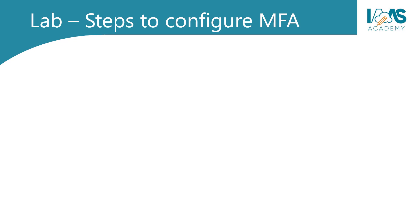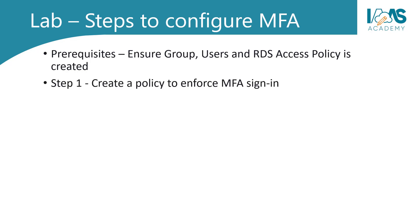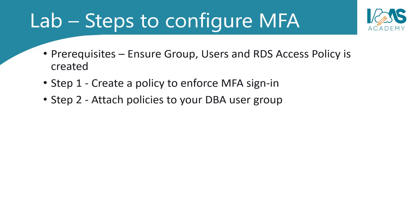So let's take a look at the steps required to complete this hands-on lab exercise. You'll need some prerequisites first: ensure that in your AWS account you've configured a group — let's call it the DBA group — add a couple of users, and attach the RDS full access policy to the group. As part of step one, we'll be creating a policy to enforce MFA sign-in. I've included a sample policy in the resources section of this video. In step two, attach the policy to your DBA users group, and in step three, test your users' access. Let's look at the sample policy first and then jump into the AWS Management Console.